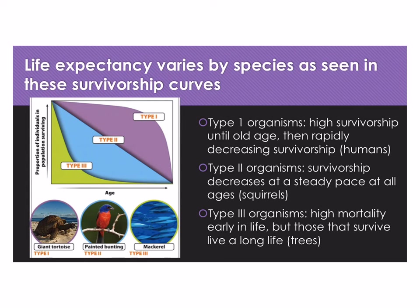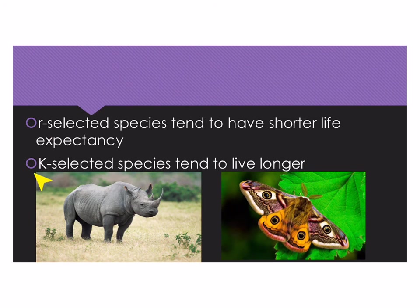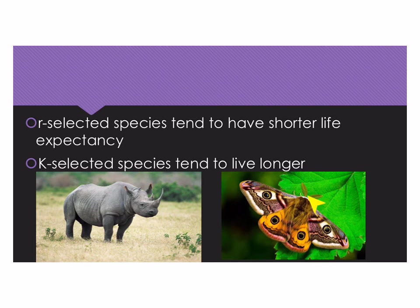Other Type 3 examples are some mackerel fish, which apparently live a long time, and another Type 1 example is the giant tortoise. Coming back to R and K selected species: R-selected species tend to have a shorter lifespan, and K-selected species tend to live longer. For example, rhinos live around 20 to 30 years, while moths live only a couple of weeks.